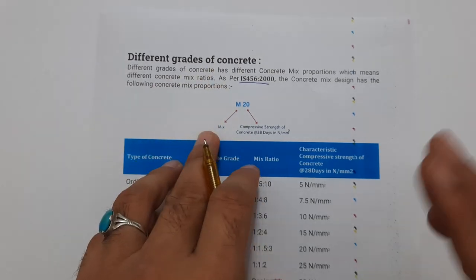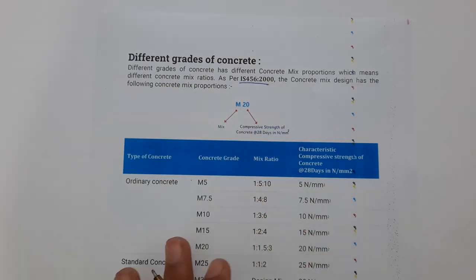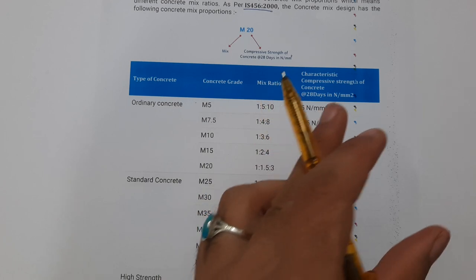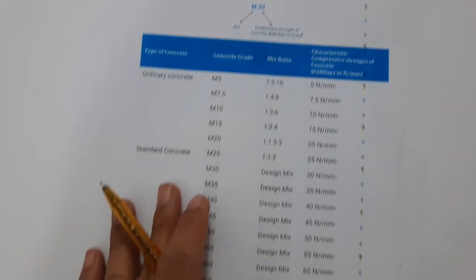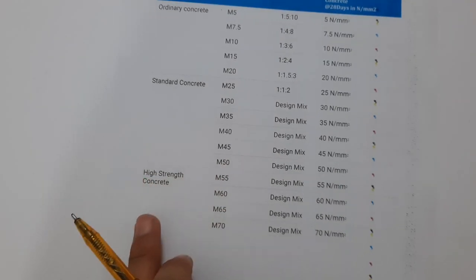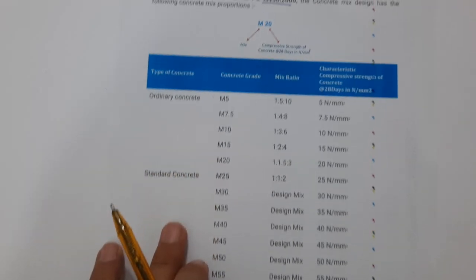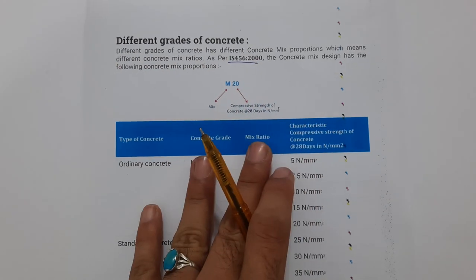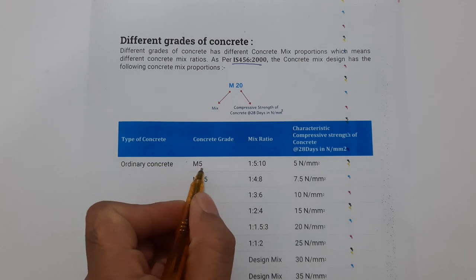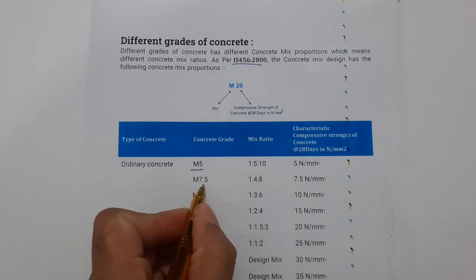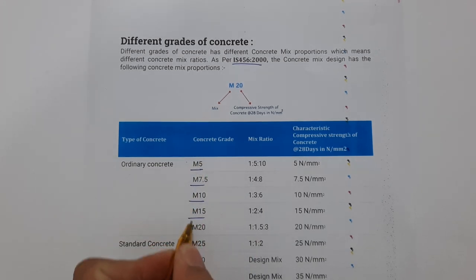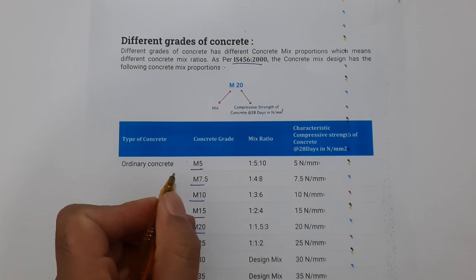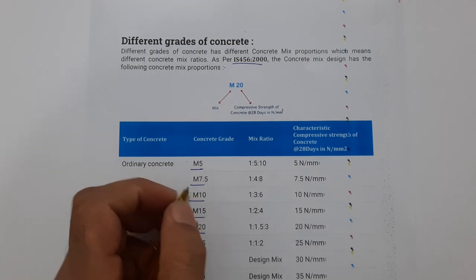Now, what is the grade of concrete? As you can see in this table, we have different types of concrete: ordinary concrete, standard concrete, and high strength concrete. For these three types we have different grades of concrete, and we can use different grades of concrete for different construction works. The grades of ordinary concrete are M5, M7.5, M10, M15, and M20. For normal residential buildings, we can use ordinary concrete.